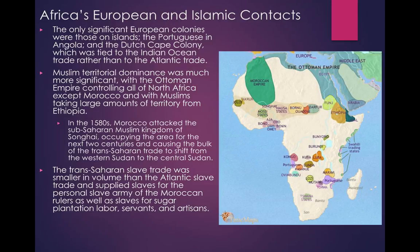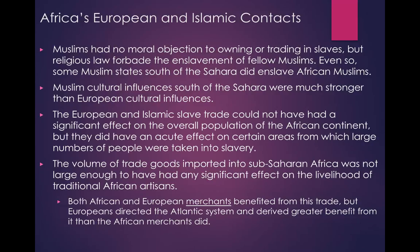In the 1770s, Muslim reform movements began to spread a purified Sufi Islam, and the movement had a major impact on the Fulani tribe of the Western Sudan. Muslims had no moral objections to owning or trading in slaves, but religious law forbade the enslavement of fellow Muslims. Even so, some Muslim states south of the Sahara did enslave African Muslims. Muslim cultural influences south of the Sahara were much stronger than European cultural influences — Islam and the Arabic language spread more rapidly than Christianity and English, which were largely confined to the coastal trading centers. Part of the reason for this is that Africans were able to identify more with the components of Islam than with the components of Christianity.